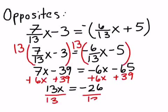And then all we have left to do is divide both sides by 13. So when we divide both sides by 13, we end up finding that x is equal to negative 2. So now remember we actually had two answers.